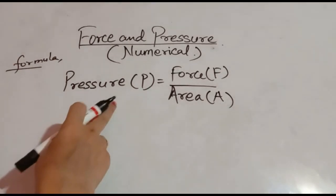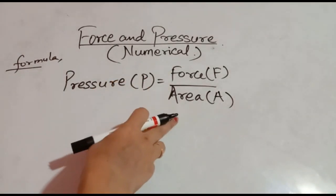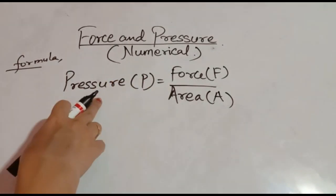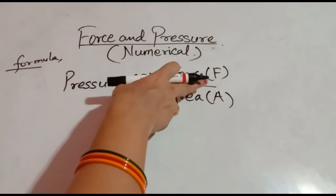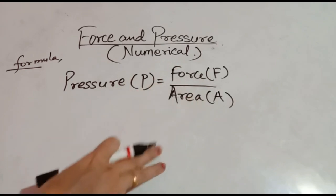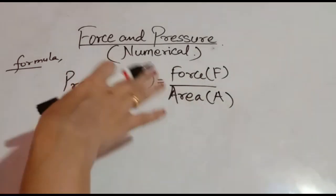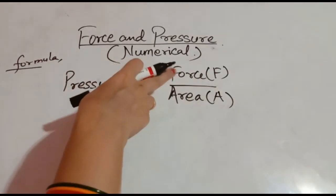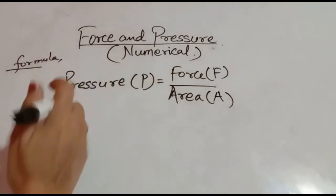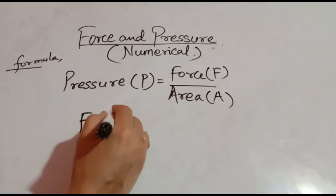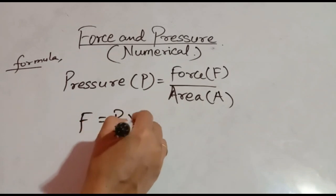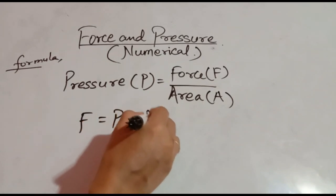What is the formula? Pressure is equal to force divided by area. We denote pressure as capital P, force as capital F, and area as capital A. Then what will be the formula for force? Force is equal to pressure into area.